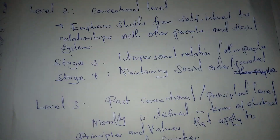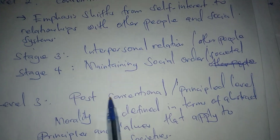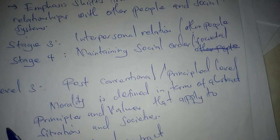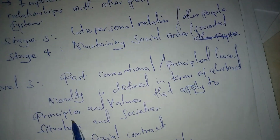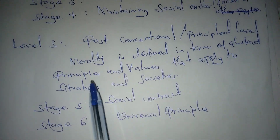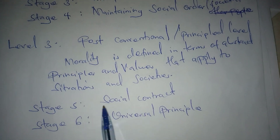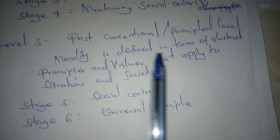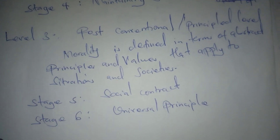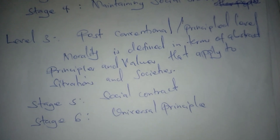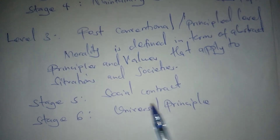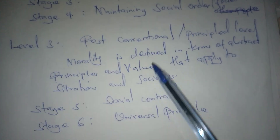Level three is the post-conventional or principled level, where morality is defined in terms of abstract principles and values that apply to situations and societies. This level covers the last two stages: stage five is the social contract, whereby you act according to the norms of the organization or environment around you, and stage six is the universal principle — respect for human rights.